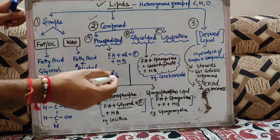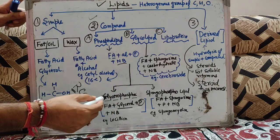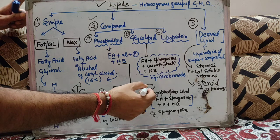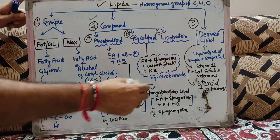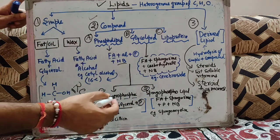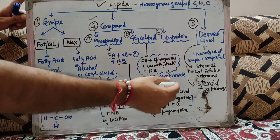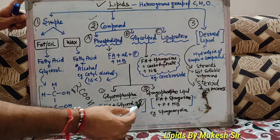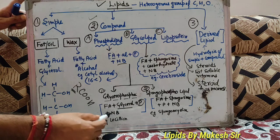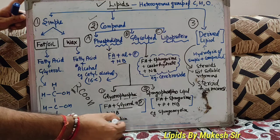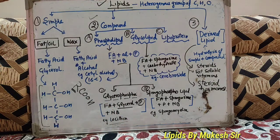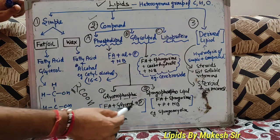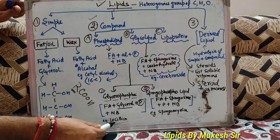Phospholipids दो types के हो सकते हैं: एक है glycerophospholipids और दूसरा है sphingophospholipids. Glycerophospholipids किससे बने होंगे — they consist of fatty acid, glycerol, phosphoric acid/phosphate, and nitrogenous base. यहाँ पर glycerophospholipids का example लेंगे — lecithin. यह NCERT के अंदर example दे रखा है, very important example. Lecithin में choline होता है nitrogen base की form में. So glycerophospholipids में fatty acid, glycerol, phosphate group, nitrogen base choline होगा — example lecithin का.